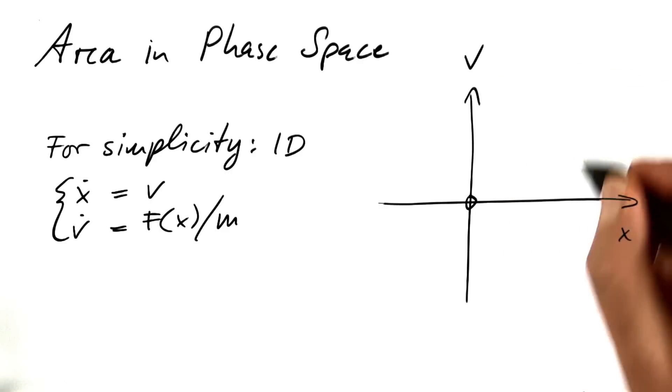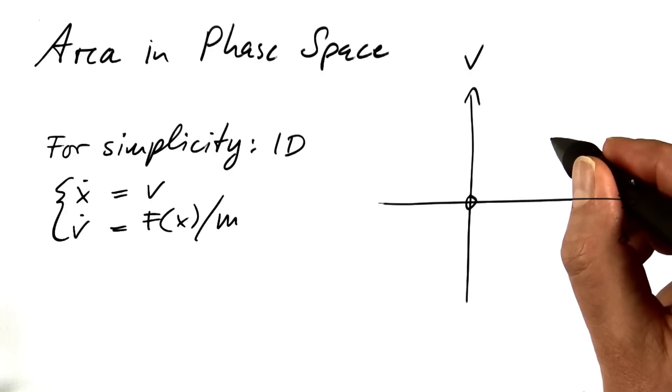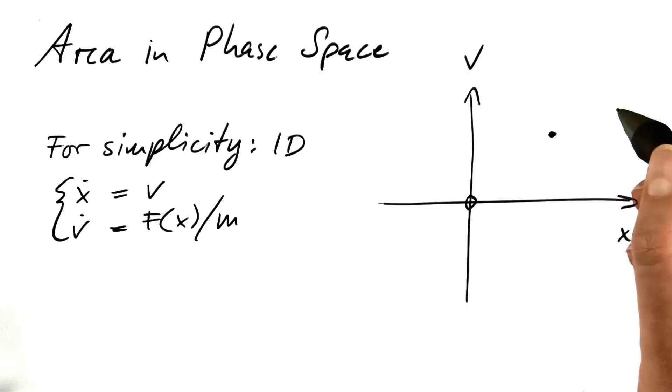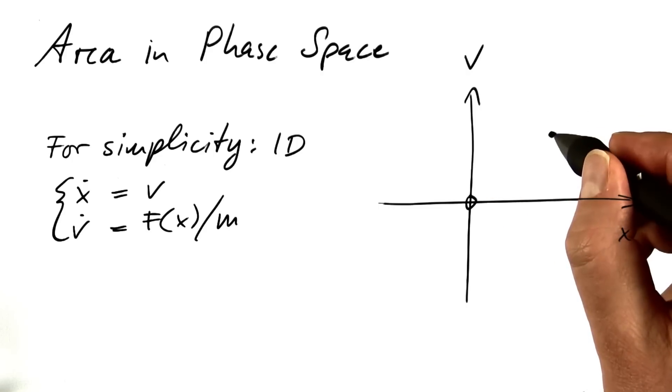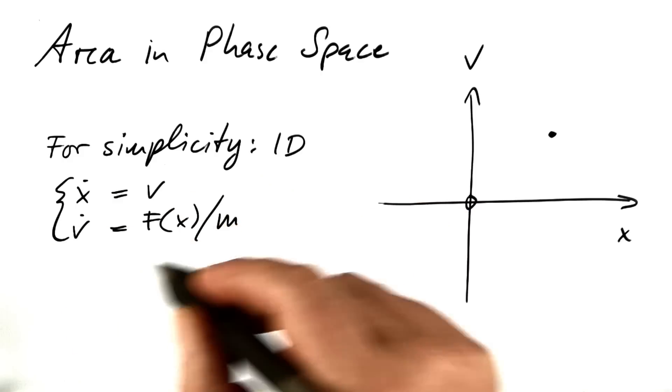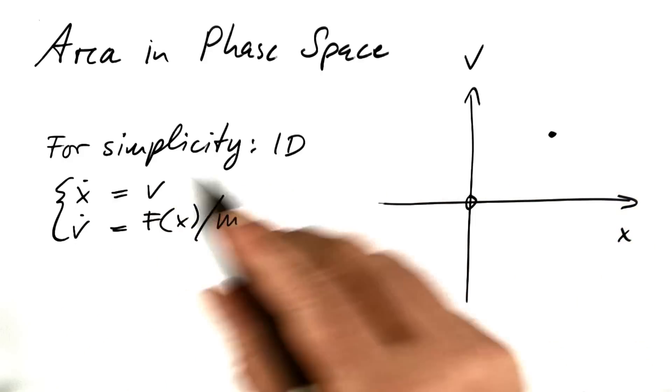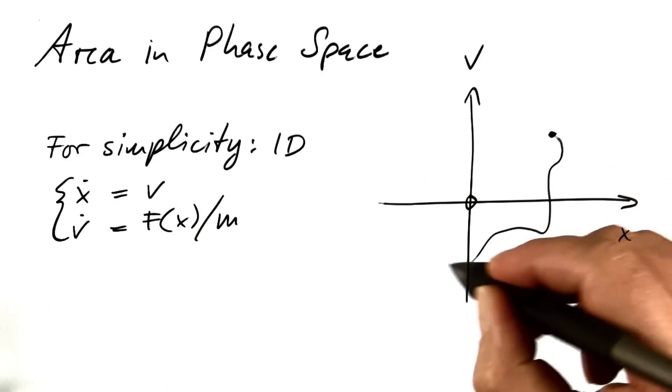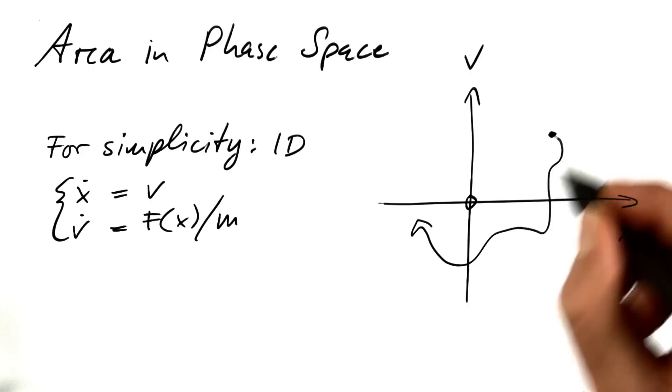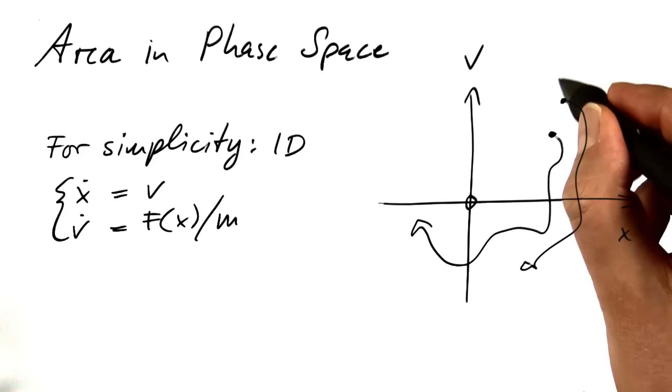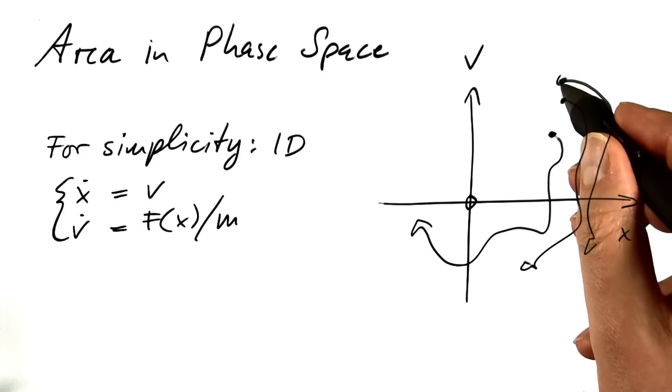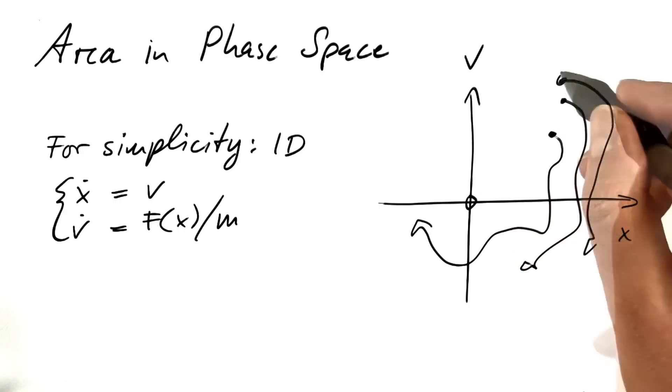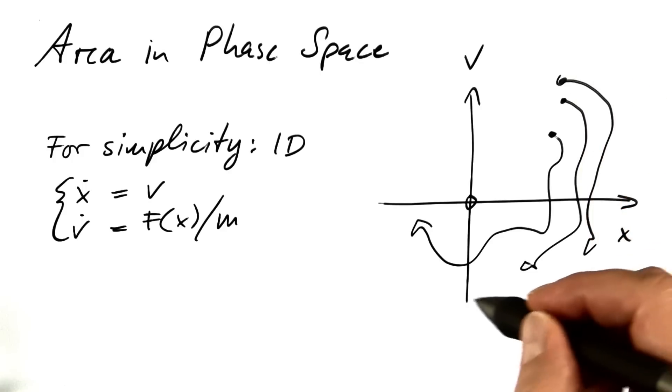For every point in this phase space, we can look at its temporal evolution. Given a value of x, given a value of v, we can solve the system of differential equations, and something is going to happen about that point, and another point, and another point. You start from that initial condition, the given x, the given v, and look at what happens to this x and that v.